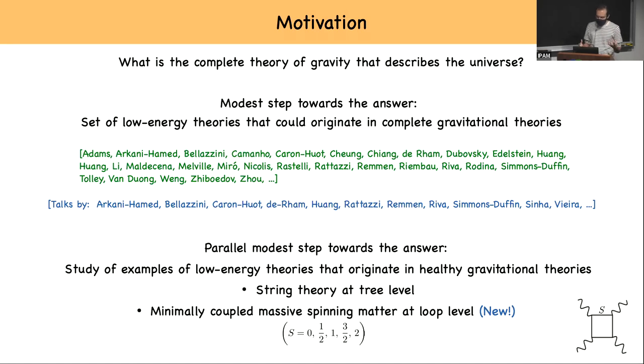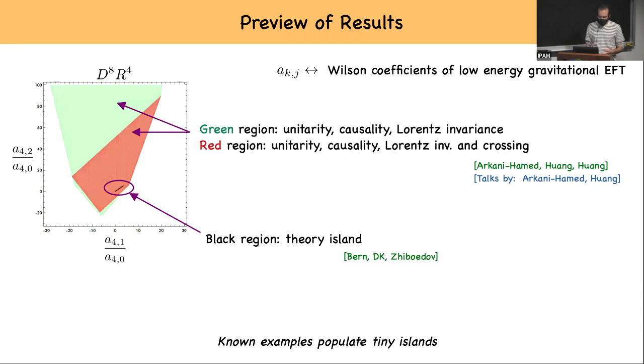So now we can take these two approaches, put them together, and see what we learn. And this is a preview of the answer. Here I am plotting ratios of Wilson coefficients, and these Wilson coefficients correspond to deviations from Einstein-Hilbert that are built out of eight covariant derivatives and four Riemann tensors. I am plotting the allowed range for these ratios. With a green region, I'm plotting what's obtained by assuming that the complete theory is unitary, causal, and Lorentz invariant, and with the red region I have also incorporated the fact that the low energy theory is crossing symmetric.